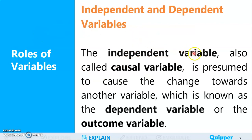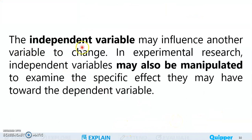When we say independent variable, it is also called the causal variable — it causes the change in another variable. It is presumed to cause the change towards another variable, which is known as the dependent variable or the outcome variable. The independent variable may influence another variable to change, and in experimental research, independent variables may also be manipulated to examine the specific effect they may have toward the dependent variable.